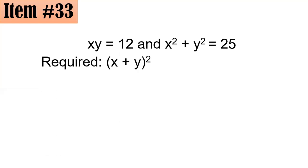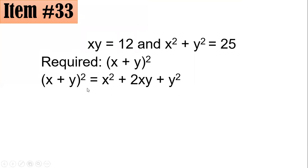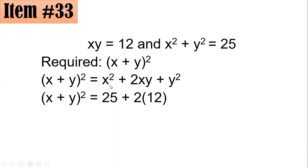We are required to find the square of the sum, which is (x plus y) squared. We know that (x plus y) squared equals x squared plus 2xy plus y squared — this is an identity. By substitution, x squared plus y squared is 25.